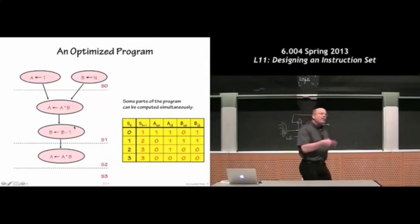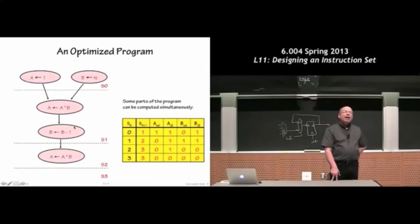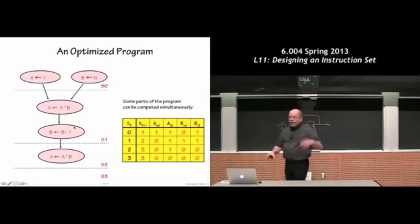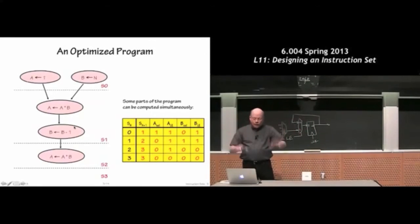But if we think a little bit about how the hardware works, remember that we're loading the new value into the registers at the end of the clock cycle, on the clock edge that separates one clock cycle from the next. And what we can see by looking at this is, in fact, we can do these two operations in parallel, knowing that A and B will change simultaneously.